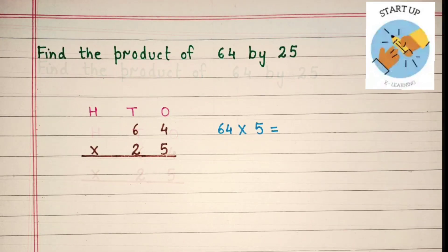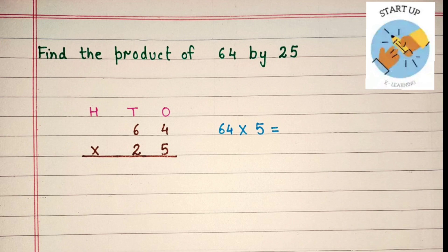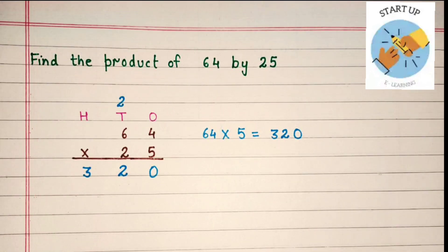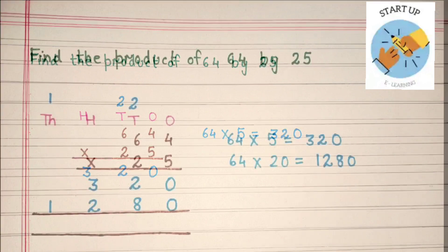Let's start solving this. First of all, we will multiply 64 by 5. 5 fours are 20 — 0 will be written under 1's and 2 will be carried over on 10's. 5 sixes are 30. 30 plus 2 which was carried over is equal to 32. So, the first partial product is 320.